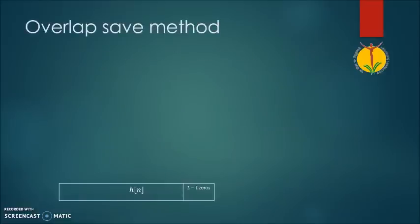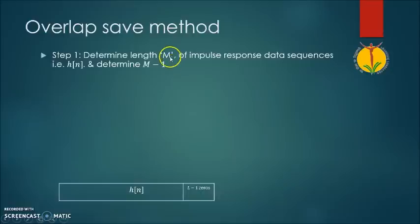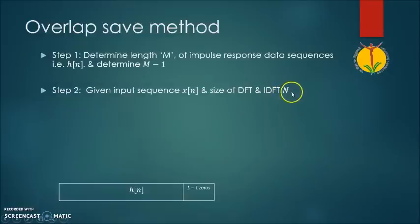Let us see what the overlap save method is. In the first step, suppose we have a filter of response h and we have to determine its length. So M indicates the length of the impulse response of a filter. From this value of M, we have to determine the number M-1. Next, for the given input sequence, we have to determine the size of the DFT and IDFT, denoted by capital N. You can have N equal to 4 or N equal to 8.